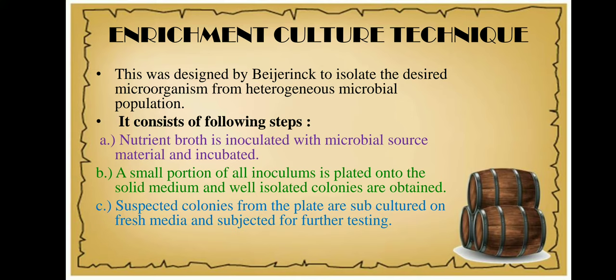As another example, if I have to isolate microorganisms producing alkaline proteases, I will take a soil sample and subject it to serial dilution. All soil dilutions are heated at 80 degrees Celsius so that all vegetative cells are killed but the spores remain unaffected.